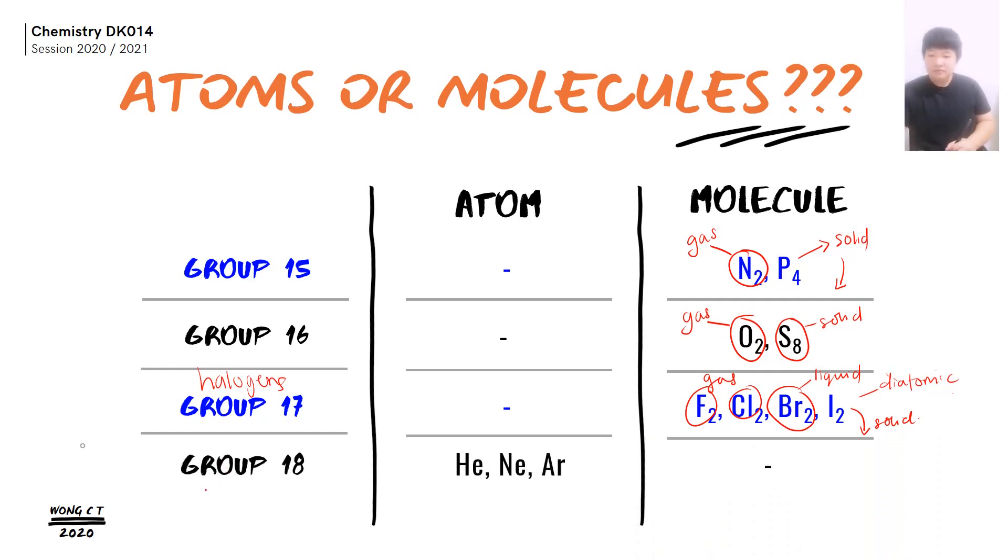Group 18, which is your noble gases. All noble gases is a monoatomic, therefore they are all atoms only. The example that I have is helium, neon, argon. All three is a colorless and odorless gas.